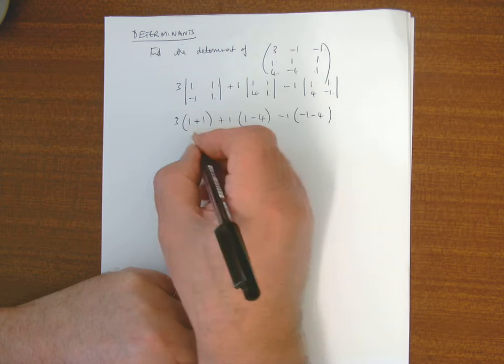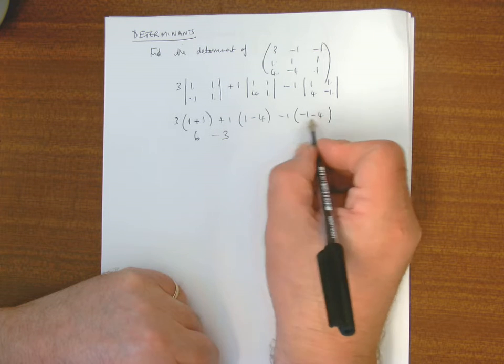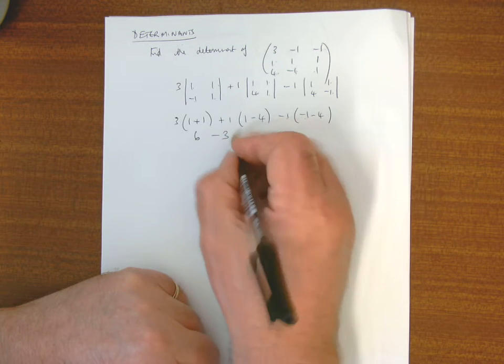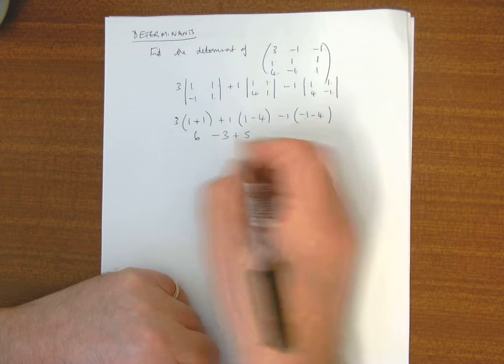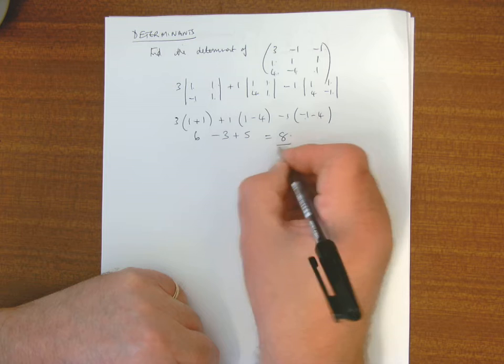So that's 6, minus 3, minus 3, that's minus 3, that's minus 5, so that's plus 5, so that's going to 8.